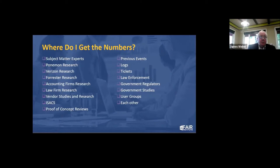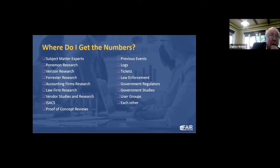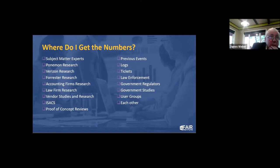Doug Hubbard wrote a book — 'How to Measure Anything in Information Risk' — and he says you have more data than you think and you don't need as much as you think. Collaborate with your business, legal team, and finance team — they have good data on labor rates and historical costs. You can also go to peers in the industry; there are ISACs — sector information sharing groups — that can provide data. The FAIR Institute has data, and consultants can share additional benchmarks.